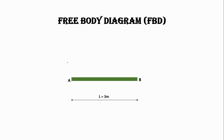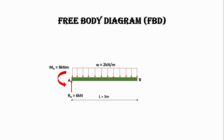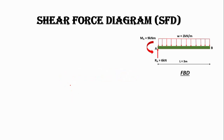Let's draw the free body diagram. We have a beam AB of 3 meter length with a uniformly distributed load of 2 kilonewtons per meter acting on it, with support reactions at A. The vertical reaction is 6 kilonewtons and the moment is 9 kilonewton meters acting in the anti-clockwise direction. There is no horizontal force acting on this beam.